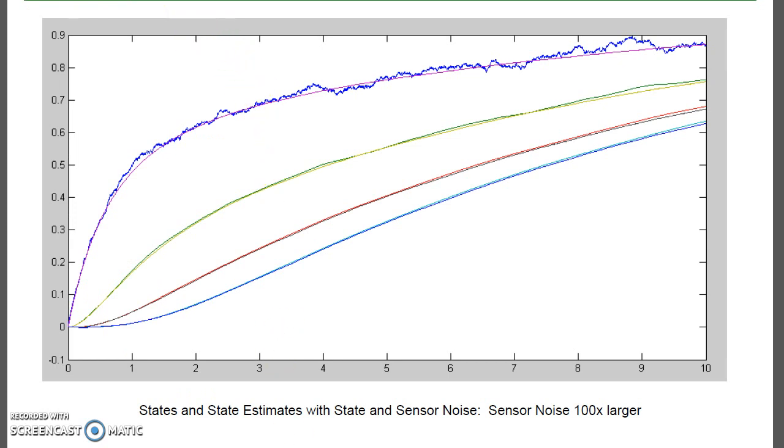In that case, what I wind up with is almost an open-loop observer. I know the input is a step. Given the input, I can tell you what the states are. And I'm sort of ignoring the output, at least not counting it very heavily. That way, the sensor noise doesn't appear on my state estimates.